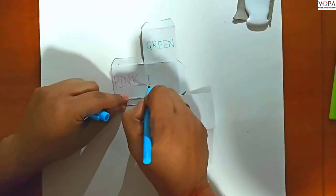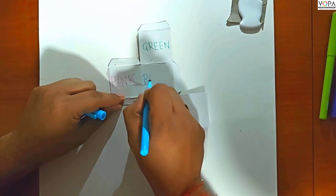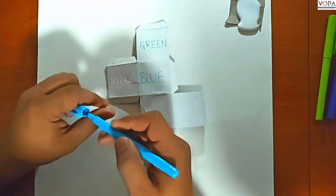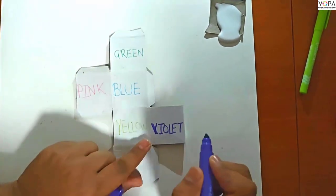Now write the words green, pink, blue, yellow, violet, orange on the net. One word in each square.